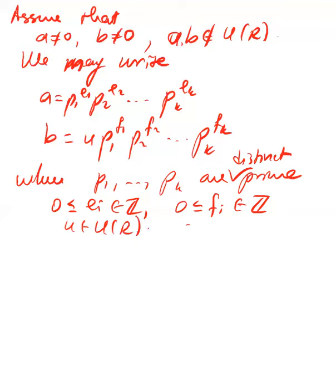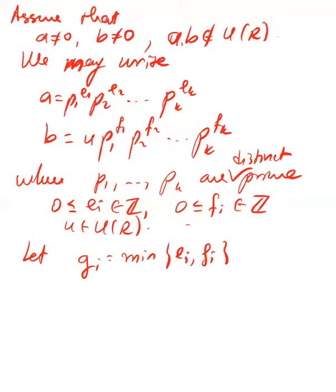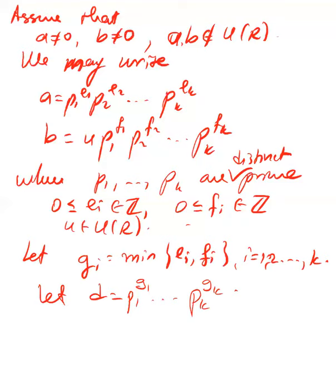Let gᵢ be the minimum of eᵢ and fᵢ for i equals 1 to k. Some gᵢ might be zero. Then let d equal p₁^g₁ · p₂^g₂ ··· pₖ^gₖ. Since gᵢ ≤ eᵢ and gᵢ ≤ fᵢ for all i, d divides a and d divides b clearly. So the first condition of the GCD definition is satisfied.